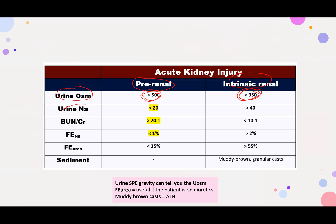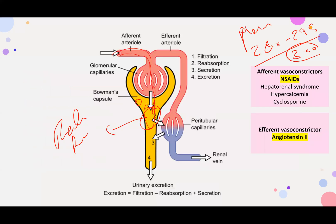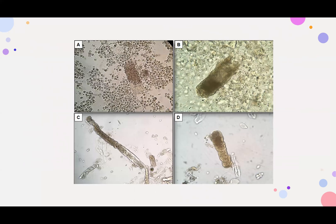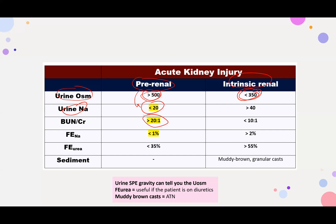The other key parameter is urinary sodium. With pre-renal, the kidneys reabsorb fluid and sodium, so urinary sodium is low (less than 20 mEq/L). The BUN-to-creatinine ratio in pre-renal is more than 20:1, because the kidneys reabsorb BUN but not creatinine — that is why we use creatinine clearance to reflect kidney function.